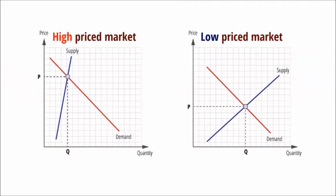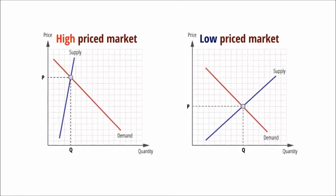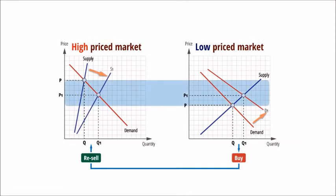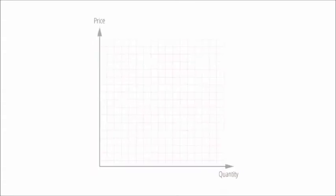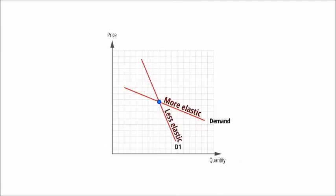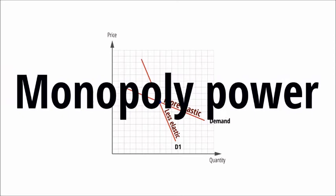To make price discrimination work effectively, firms need to prevent arbitrage — the process where traders exploit price differences by buying where the price is lower and selling where it is higher, causing prices to converge and making sustained price discrimination impossible. Arbitrage can be prevented by using non-transferable travel tickets, limiting quantities that can be bought, having licensed traders or outlets, and using new technology to control trading. Different sub-markets must also have different price elasticities, and the firm must have some degree of monopoly power — they must be price makers.